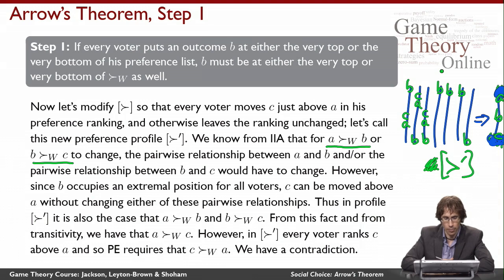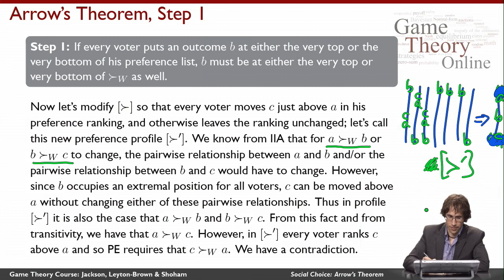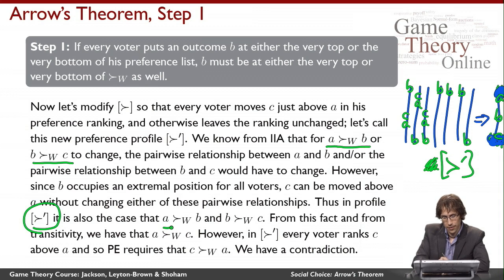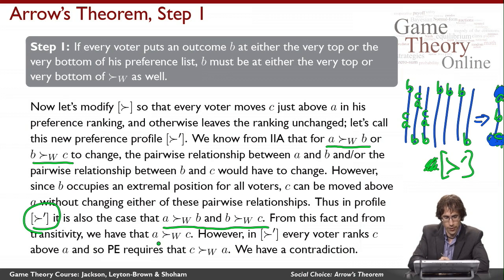However, notice that B occupies an extremal position for all voters. That means C can be moved above A — going from pref to pref prime — without changing any of the pairwise relationships between C and B, or between A and B. Thus we can conclude that in preference profile pref prime, it is also the case that A is socially preferred to B and B is socially preferred to C. We assumed those were true in pref for contradiction, and because nothing relevant changed, IIA tells us they must also be true in pref prime. From transitivity, A must be ranked above C in the social welfare function.